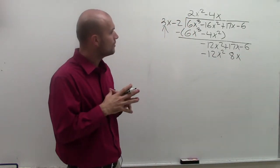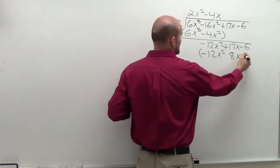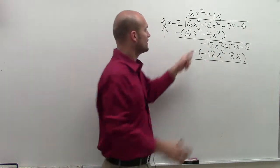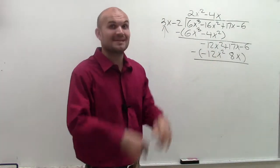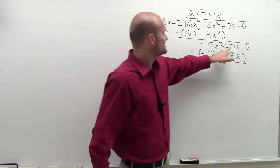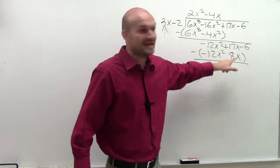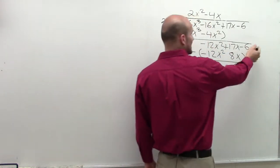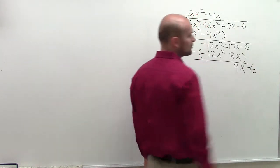So now what we need to do is again subtract the sides. I'm going to put them in parentheses and subtract. So negative 12x squared minus a negative 12x squared is 0x squared. 17x minus 8x is going to be 9x. And negative 6, I have nothing to subtract it from, so I'll just bring it down.